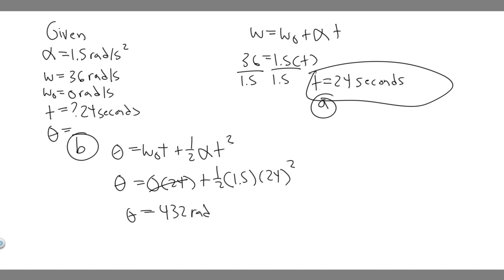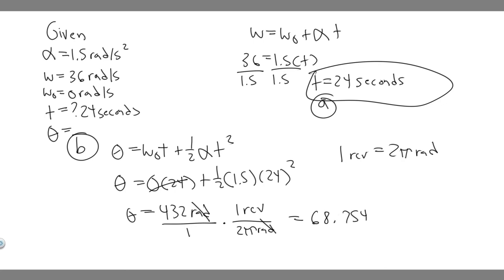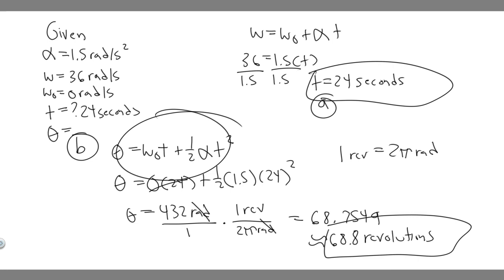But we need the answer in revolutions, not radians. Since 1 revolution equals 2π radians, we divide 432 by 2π. That gives approximately 68.75, which rounds to 68.8 revolutions. So the blade turns about 68.8 revolutions during this 24-second interval — that's the answer to Part B.